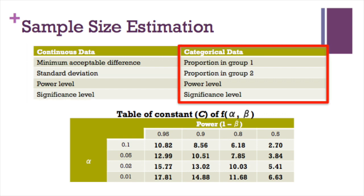For dependent categorical data, we need to know the proportion in group 1 and the proportion in group 2.